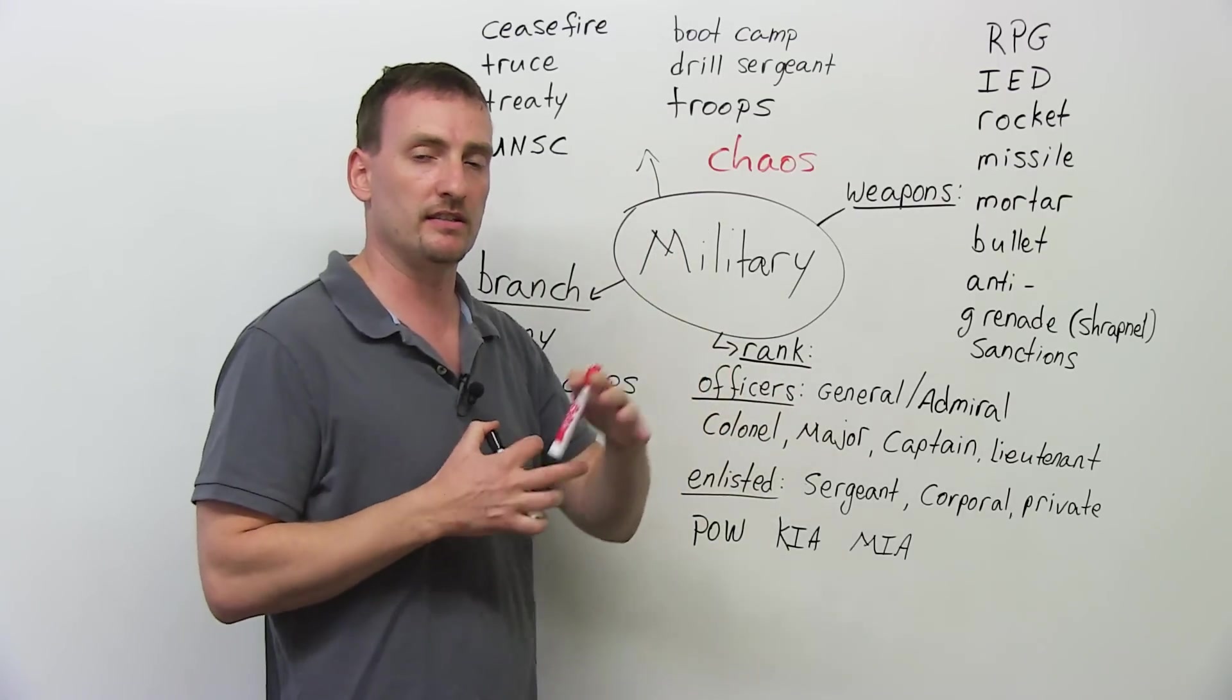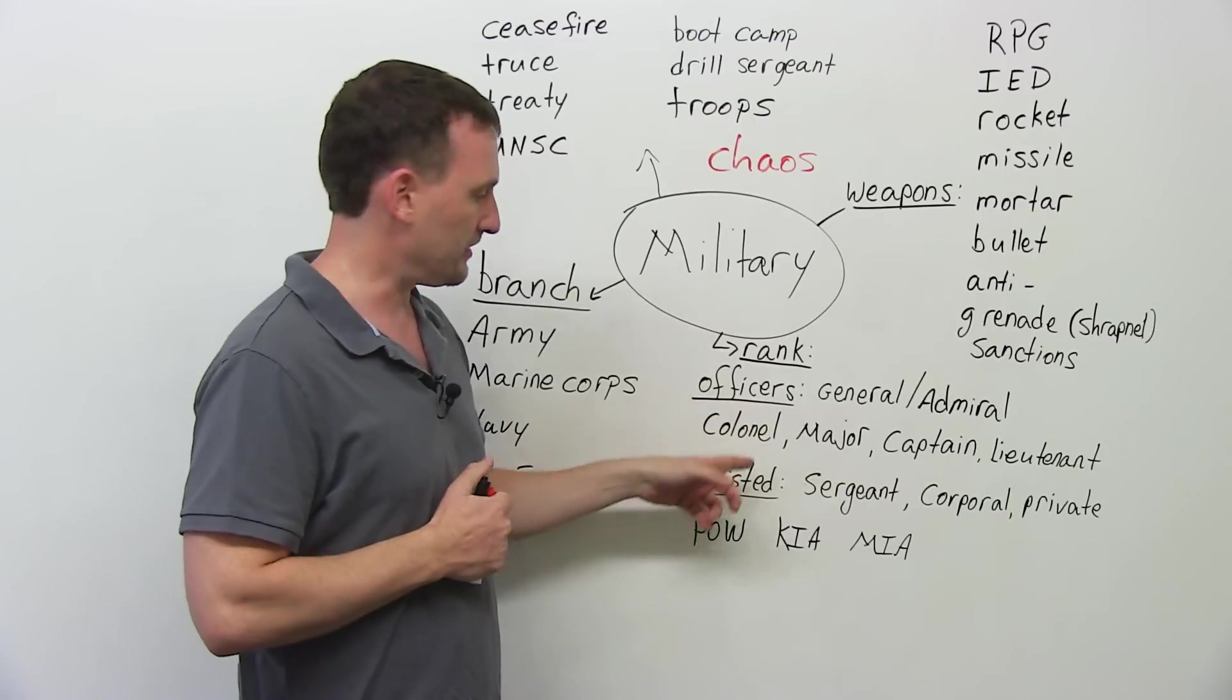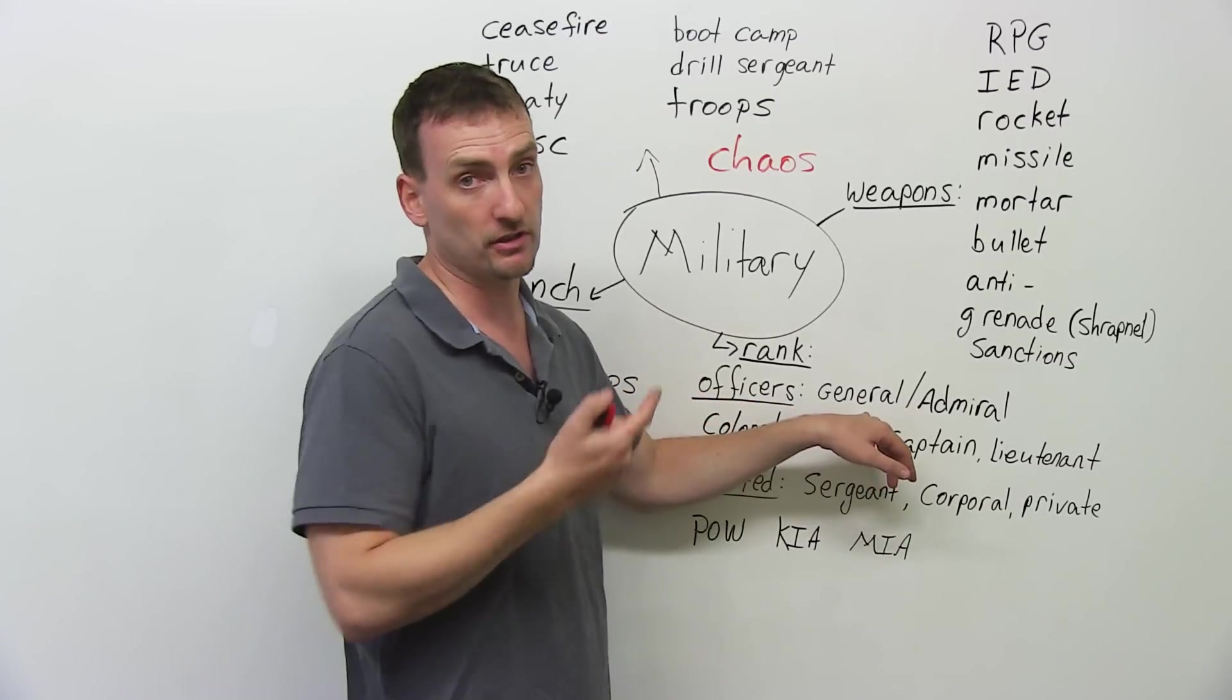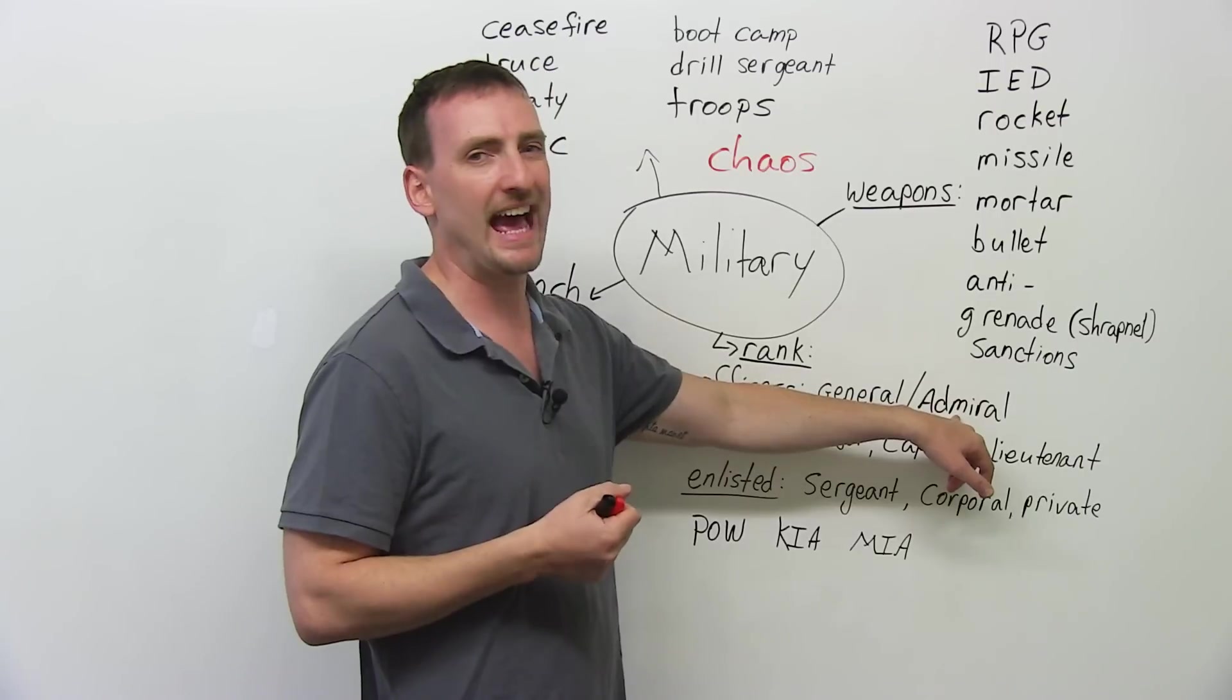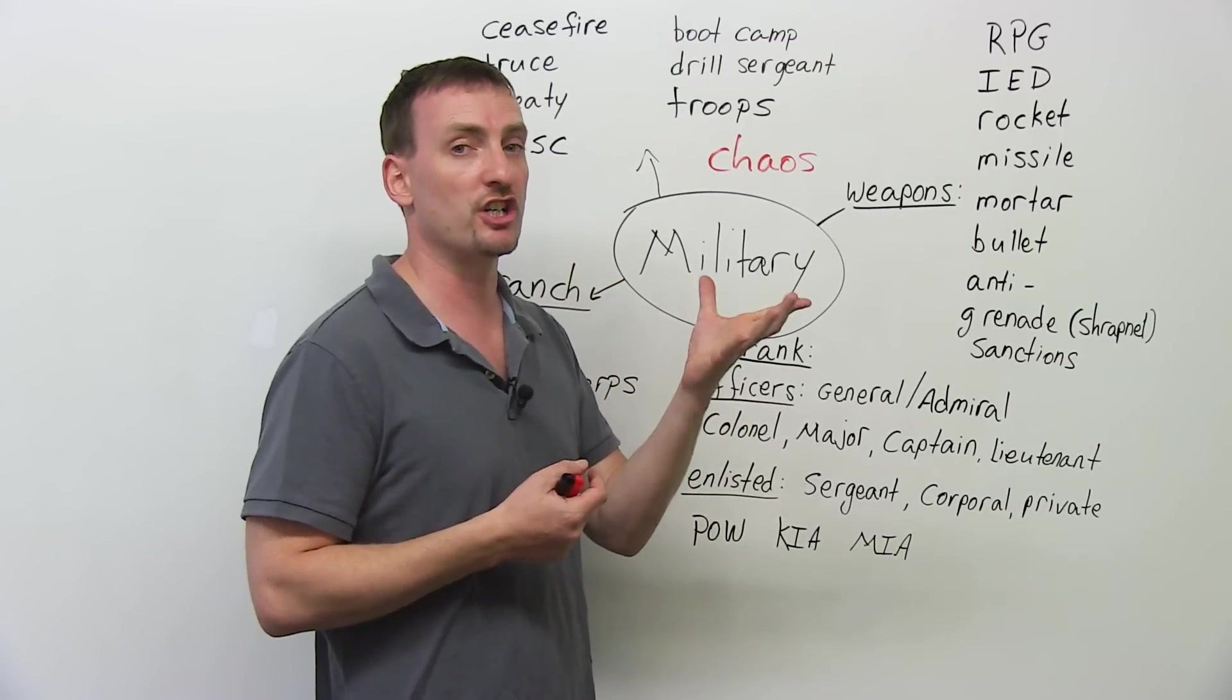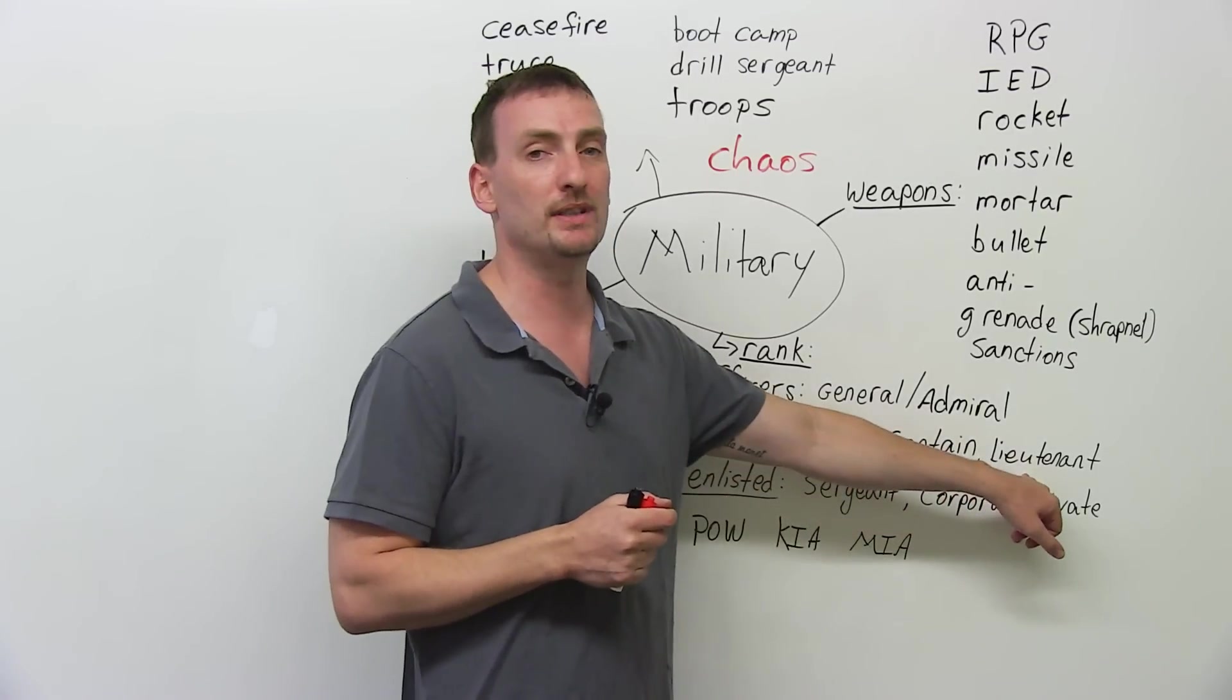Now, if you want to know the rank, this means the level of the people in the armies. We have officers, and then we have the enlisted personnel. The officers. The top are... Is the general in the army and in the Marine Corps. In the Navy, they have an admiral. Then, you have a colonel. Although this is an L, it sounds like an R, colonel, like popcorn colonel. You have a major. You have a captain. You have a lieutenant.